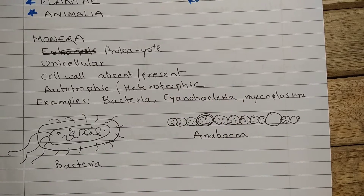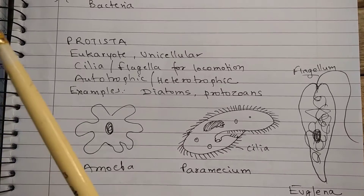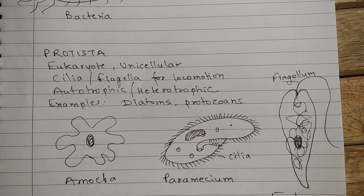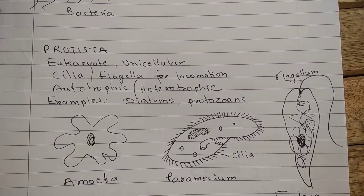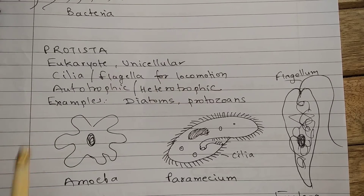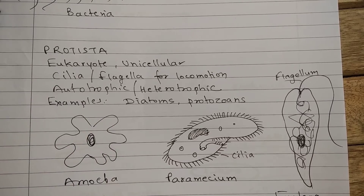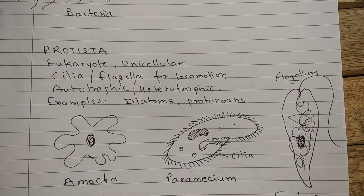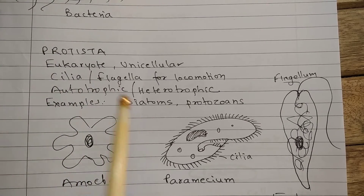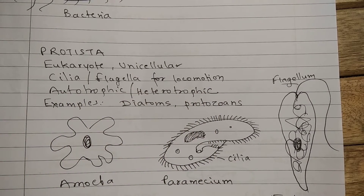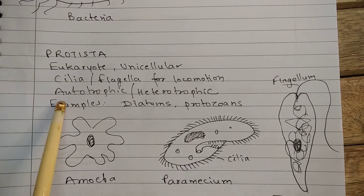The next kingdom is Protista. Protista contains eukaryotes and unicellular organisms. Eukaryote means that genetic material is organized into a nucleus, or nucleus is present. Along with the nucleus, cell organelles are also present. In some of the organisms, cilia or flagella can be present for locomotion. The mode of nutrition can be autotrophic or heterotrophic.